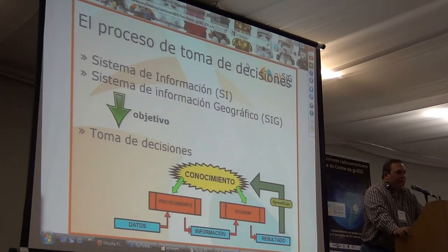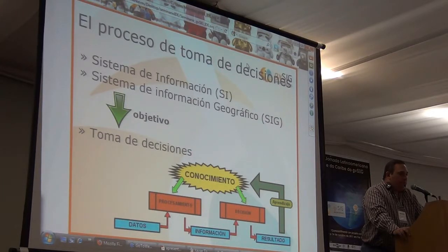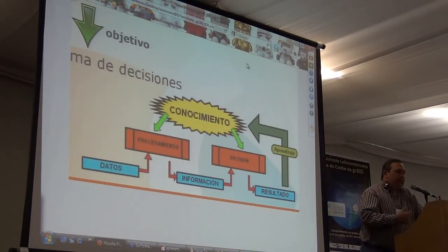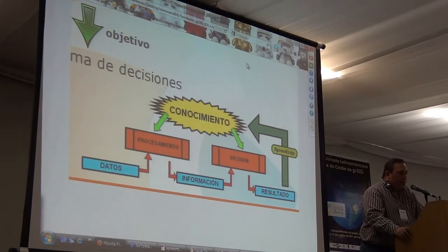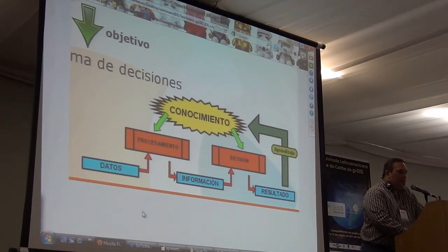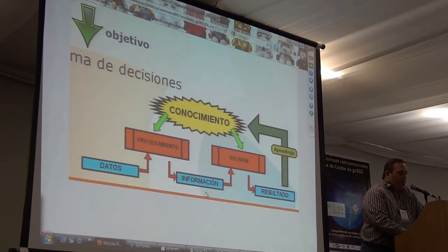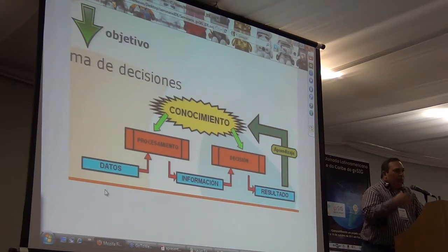¿Para qué necesitamos los sistemas de información? ¿Cuál es su objetivo? El verdadero objetivo de cualquier sistema de información es la toma de decisiones. Se genera un ciclo en la toma de decisiones, en el cual tenemos los datos, la captura de datos. ¿Cómo se obtienen los datos? A partir de observación. Yo observo, y la observación me genera un dato.